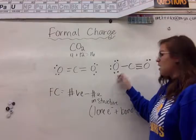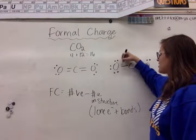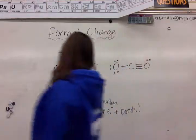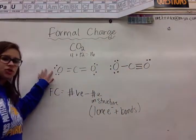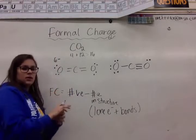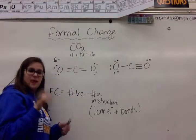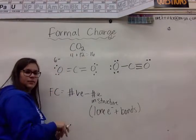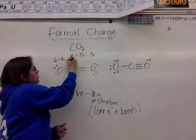Over here, this oxygen has 1, 2, 3, 4, 5, 6, 7 electrons. Do we see that? So if we're calculating the formal charge, oxygen has usually 6 valence electrons. We're going to subtract the number of dots and lines. Basically how many there are. So we have 1, 2, 3, 4, 5, 6. 6 minus 6 equals 0.